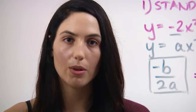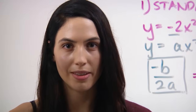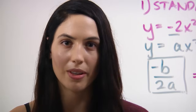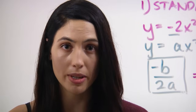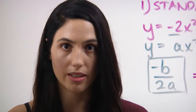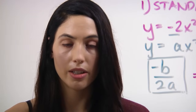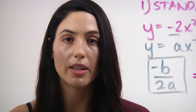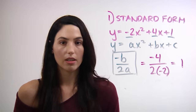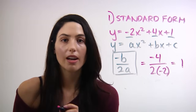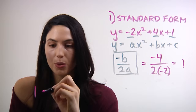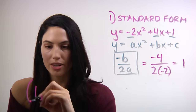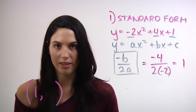So what trips people up in finding the vertex is that they don't know the equation. If you can remember negative b over 2a, then you're set — that will give you the vertex. So now you have 1, which is your x-coordinate in your vertex pair. You're halfway there.